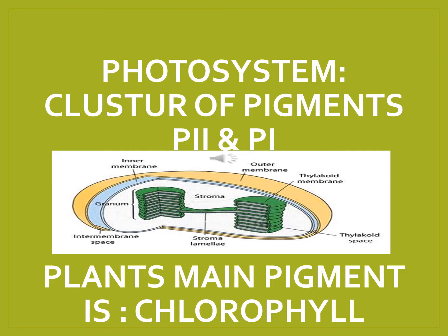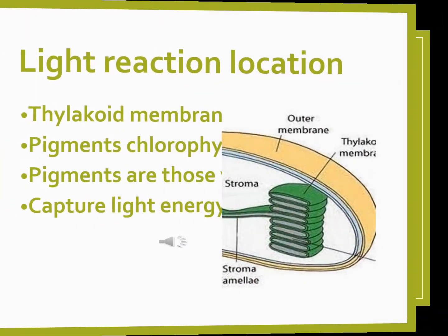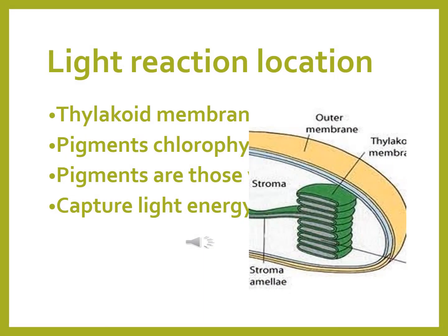So what is a photosystem? Photosystems are basically clusters of pigments. There are two types of photosystem: photosystem 2 and photosystem 1, and these are located on the thylakoid membrane. The plant's main pigment is chlorophyll. The process of light reaction occurs in the upper zone of the thylakoid membrane, on which the pigment chlorophyll is present for capturing light energy.